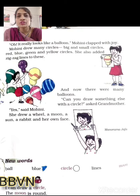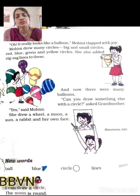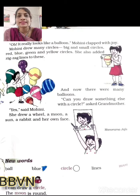Mohini drew many circles — big and small circles. Mohini ne bahut saare circles banaaye, chote circles, bade circles. Red, blue, green and yellow circles — red color ka, blue color ka, yellow color ka — aisi different colors ke circles Mohini ne banaaye. She also added zigzag lines to these, usne zigzag lines bhi add kar di unme.